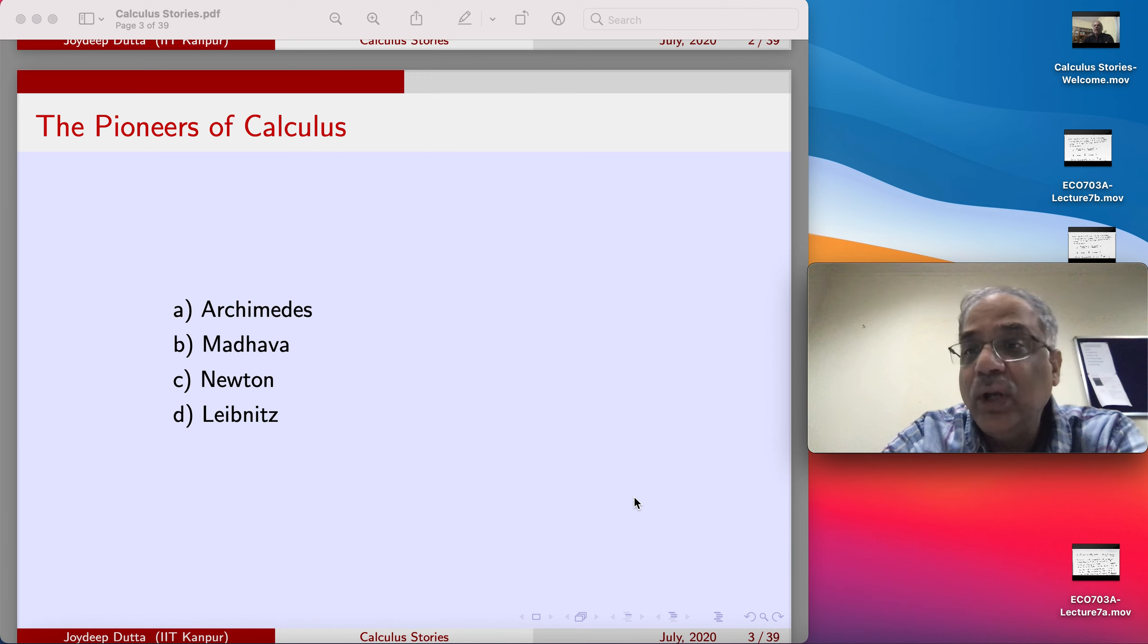He knew about the Gregory series of tan inverse x, and it is now called the Madhava-Gregory series. By the way, it's not that as an Indian I'm forcing some Indian name here - this is a well-known fact now. In fact, many western writers, including Ian Stewart from whose book I have taken some information here, actually considers Madhava as one of the greatest mathematicians of all time.